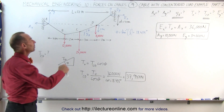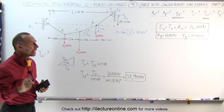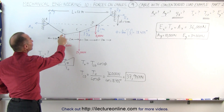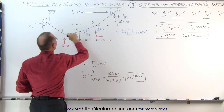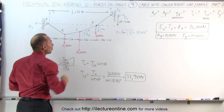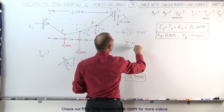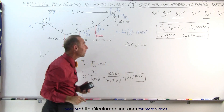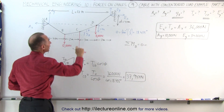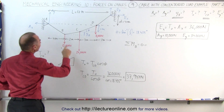Finally, we're trying to find y sub-b. To find that, we're going to find the moment about point B. Since we know the distance from D to C, we're going to take the moment about point B. The sum of the moments about B is equal to zero, and that will give us y sub-b.